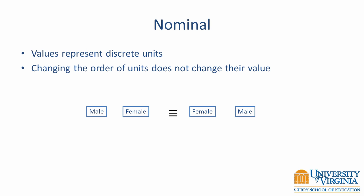With nominal data, values represent discrete units that have no inherent ordering. Examples include gender and eye color. To see that order does not matter with nominal data, change the order of the values and the meaning does not change. For example, listing male then female is no different than listing female and male.